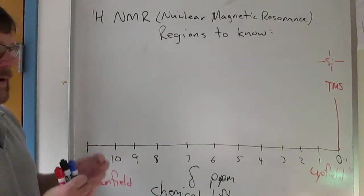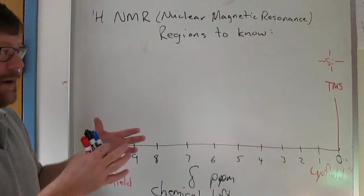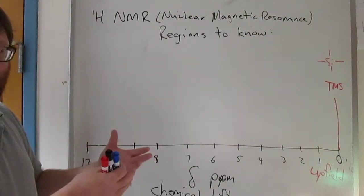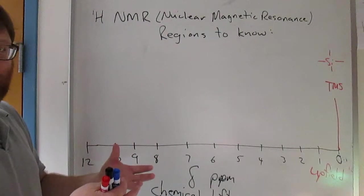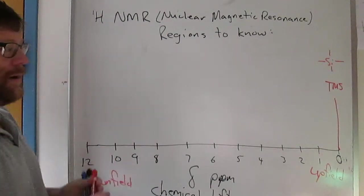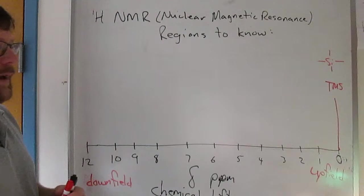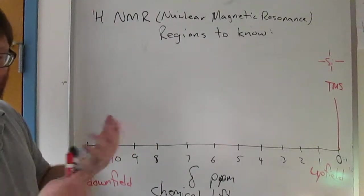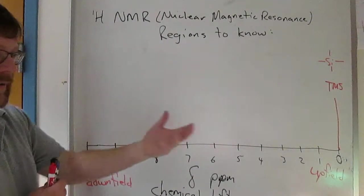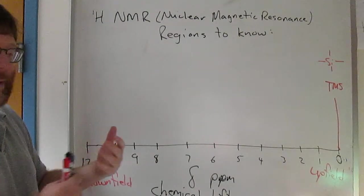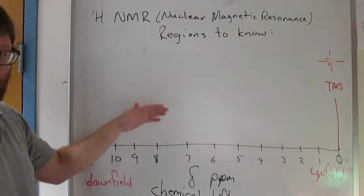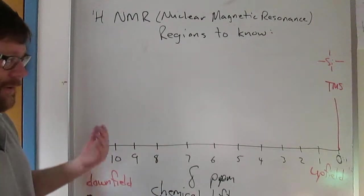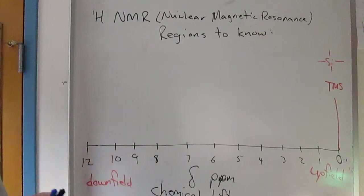If you have a bunch of electrons around a proton, functional groups with a lot of electrons, that tends to shield the proton in question from the external field and it moves upfield. If you don't have much electron density around a proton, a lot of electron withdrawing groups, that tends to expose the proton to more of the external field, and they tend to shift downfield.